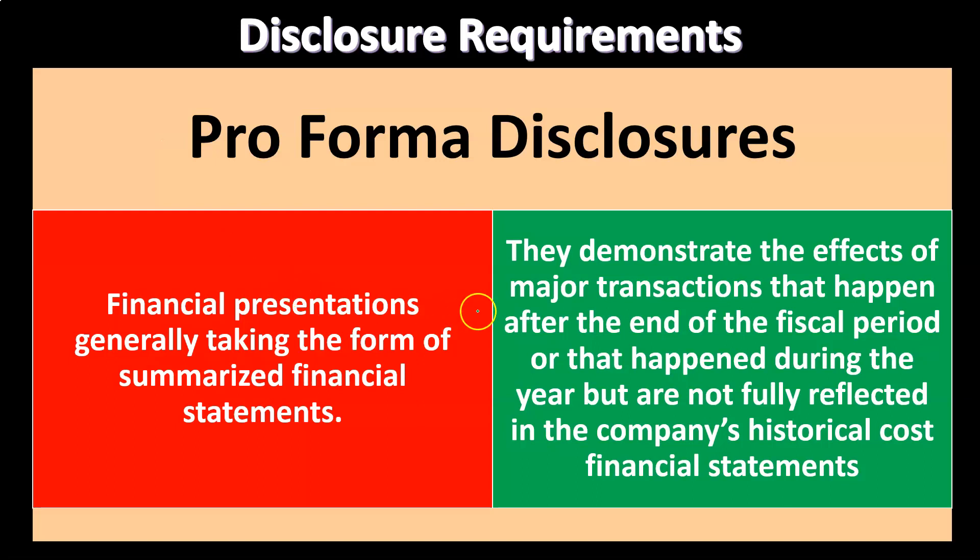So we have the historical cost financial statements. If something happened outside of the fiscal year — like after the fiscal year — you would think we're not going to include that in the financial statements, but we may then need a disclosure for it. Or if something happened in the fiscal year but is not reflected in the historical cost recorded within the financial statements, we may need a disclosure there as well.